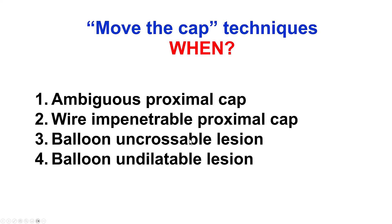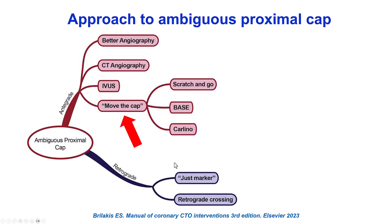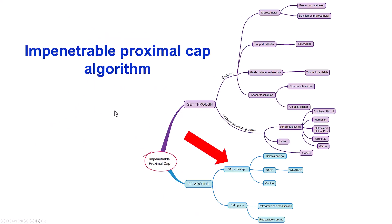The third indication is for balloon-uncrossable and the fourth is for balloon-undilatable lesions. For an ambiguous proximal cap, there are three major techniques to resolve the ambiguity: intravascular ultrasound, the move-the-cap techniques, or going retrograde. When it comes to an impenetrable proximal cap, we can address this by using more powerful guide wires and more support, or by going into the extra-plaque space — either antegrade or retrograde — to bypass the impenetrable proximal cap.